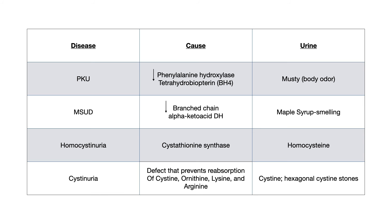In homocystinuria, you're going to see homocysteine in the urine. The test writer may also give you other symptoms not related to the urine — things like marfanoid habitus, cardiovascular effects, kyphotic spine, ocular changes where the lens subluxes inward and downward, and osteoporosis. All of those features were not in this question, so we could have eliminated the pathophysiology associated with it.